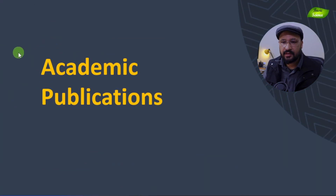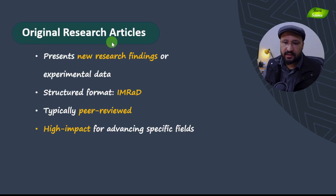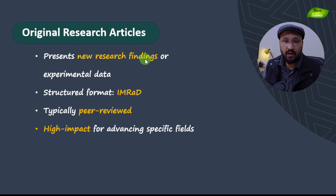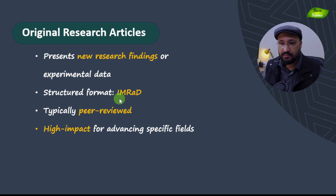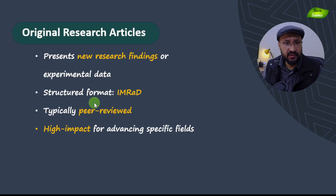Now let's understand the different types of academic publishing. We start with the original research article. This is a format where you present new research findings and experimental data. It follows a structural format called IMRAD — Introduction, Materials and Methods, Results, and Discussion — which you have to follow.